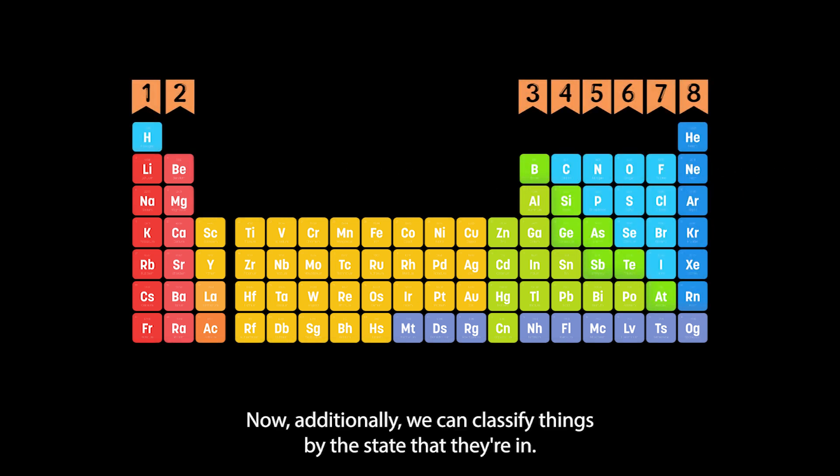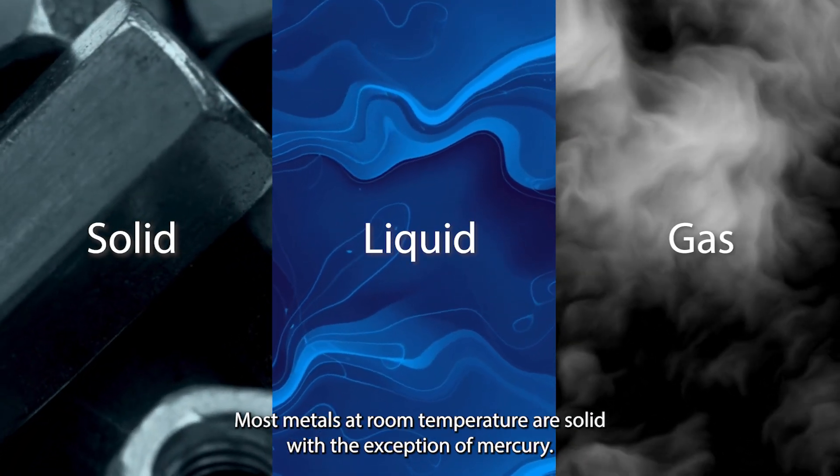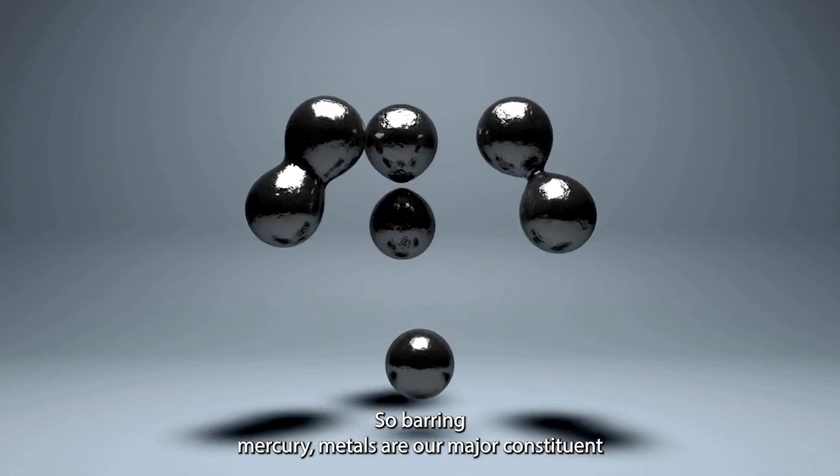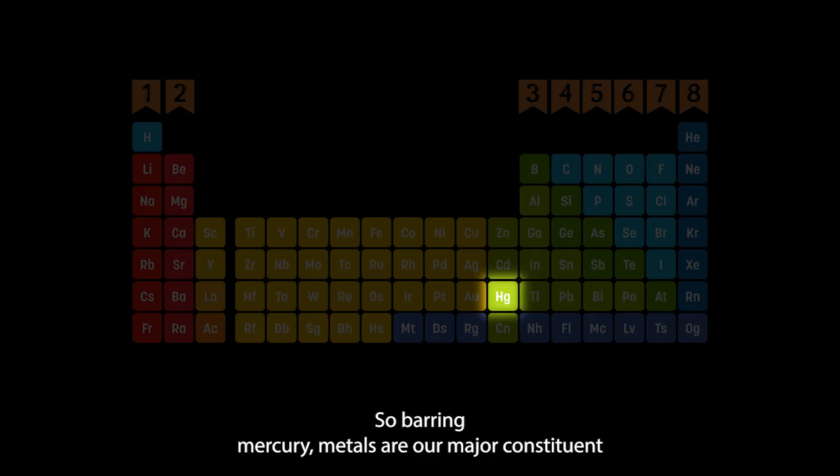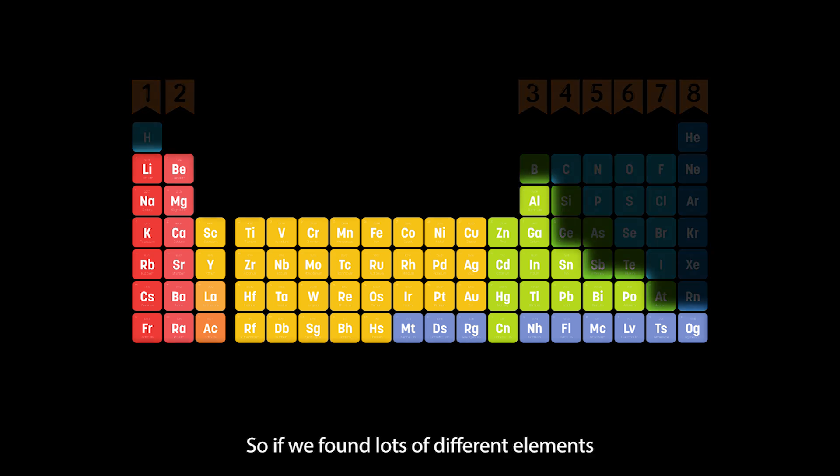Additionally, we can classify things by the state that they're in. Most metals at room temperature are solid with the exception of mercury. So barring mercury, metals are our major constituent of the periodic table that are solid at room temperature.